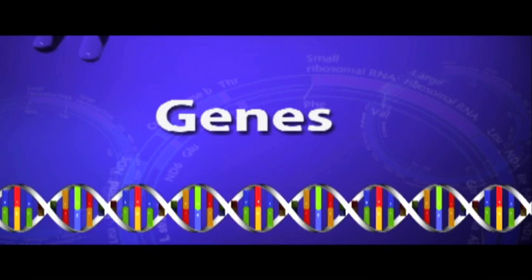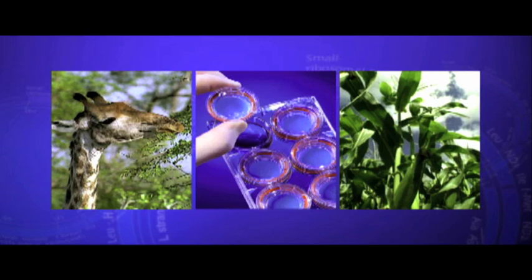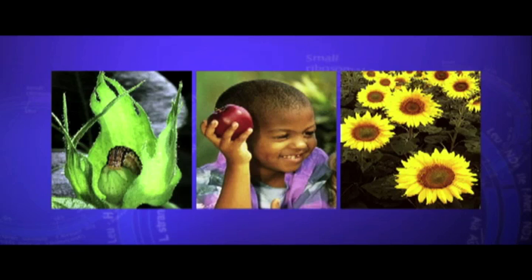Genes are units of inheritance, specific sections of DNA that determine whether you're a dog, a cat, or a corn plant, whether you're a giraffe, a bacteria, or a human being, whether you have blue eyes or brown, whether you're tall or short, dark or light.